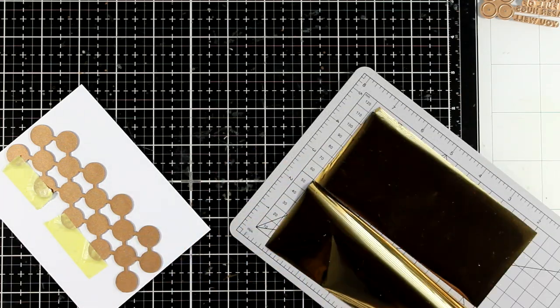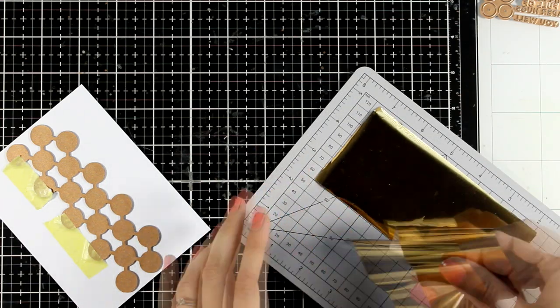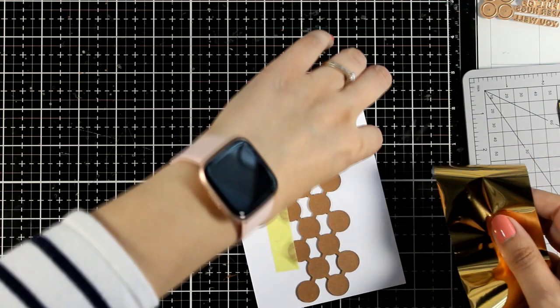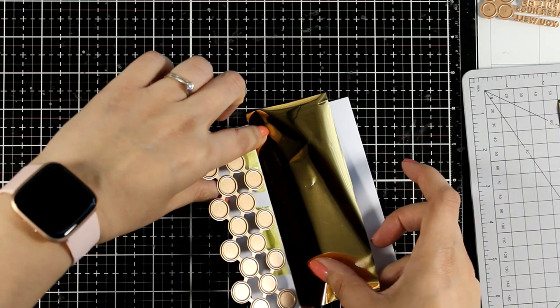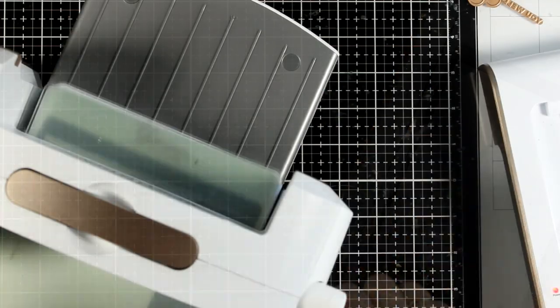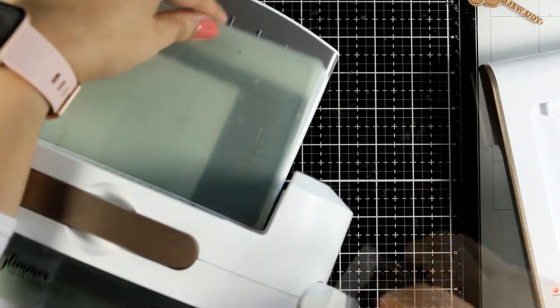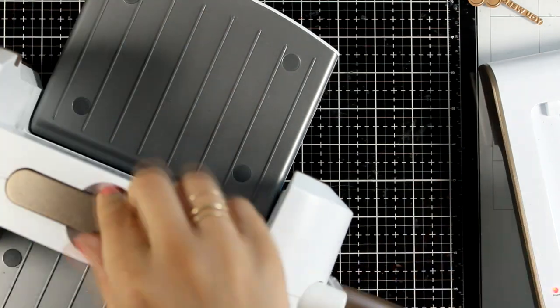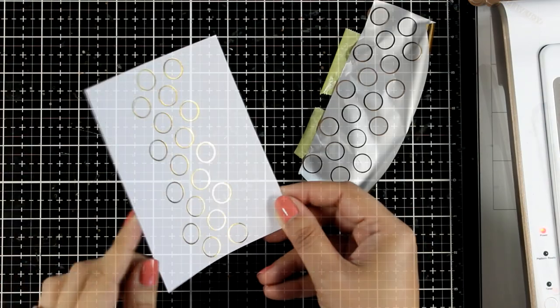I'm using my handy foil trimmer to cut out the pieces that I need and I will place the foil underneath my plate. My glimmer hot foil machine is already warm so I'm going to place that on top and then I am going to run the plate a couple of times through my die cutting machine and here is the result.